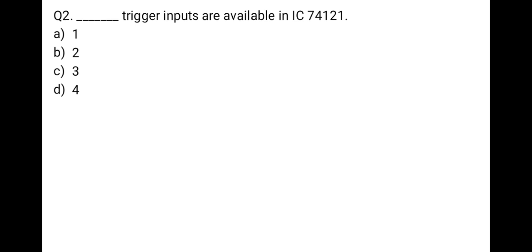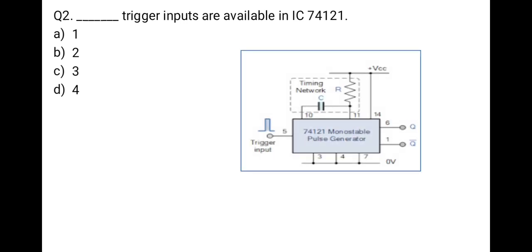The next question: how many trigger inputs are available in IC 74121? Options: 1, 2, 3, or 4. IC 74121 is a monostable, also called a pulse generator. In this circuit, pin number 5 is the trigger input, and only one trigger input is available. So the correct option is A, 1.